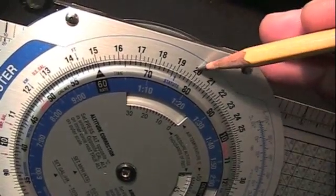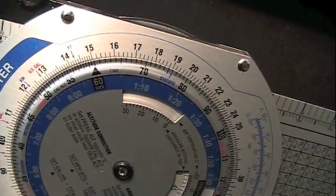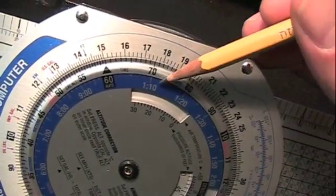Next, find your distance of 200 nautical miles on the outer scale. To determine time in route, look inward to the time scale.